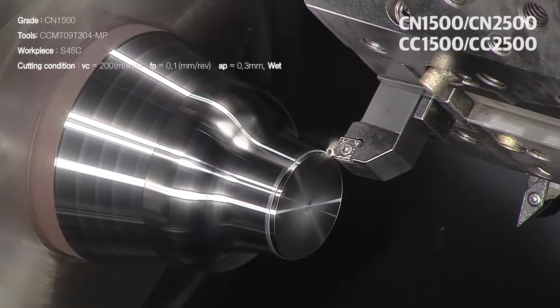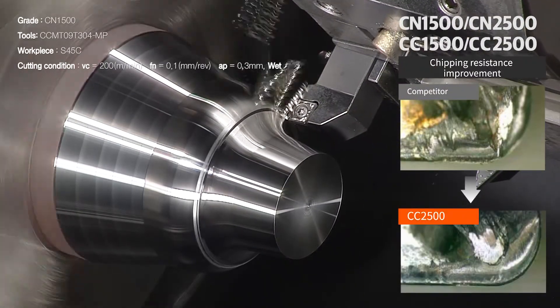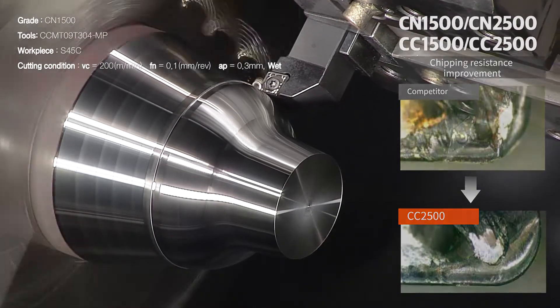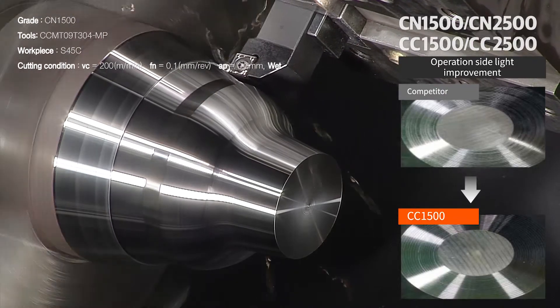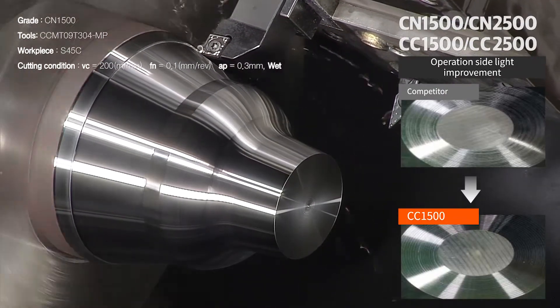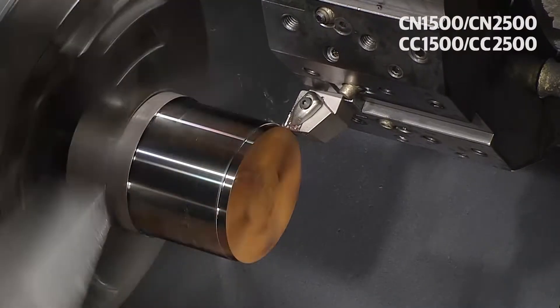The CN1500 and CC1500 have improved resistance to crater wear, welding, and oxidation. The CN2500 and CC2500 have excellent resistance to chipping, loss, and heat crack property. These improvements were achieved through an optimized cutting edge and controlled reaction with various workpieces.